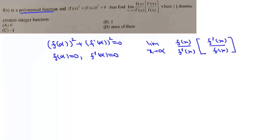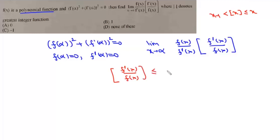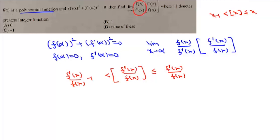We know that the greatest integer function of x is always less than or equal to x, and strictly greater than x minus one. So the greatest integer function of f'(x)/f(x) will always be less than or equal to f'(x)/f(x) and strictly greater than f'(x)/f(x) minus one.